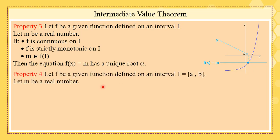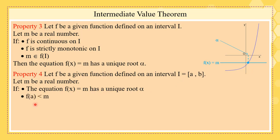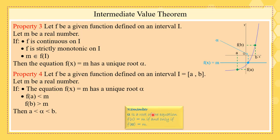Property 4: Let m be a real number and f a function defined on [a, b]. If the equation f(x) = m has a unique root alpha, and f(a) < m and f(b) > m, then alpha is between a and b. Graphically, f(a) is below m and f(b) is above m, so alpha lies strictly between a and b — since alpha is a root means f(alpha) = m.